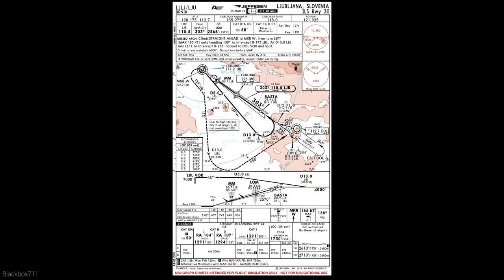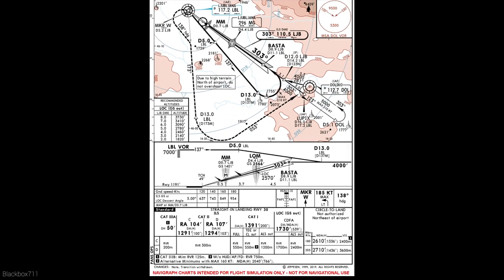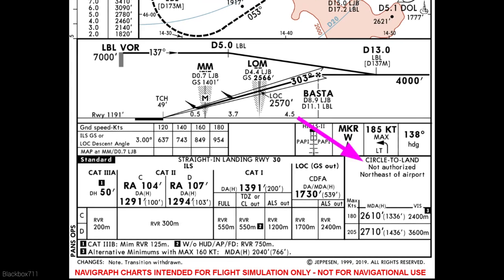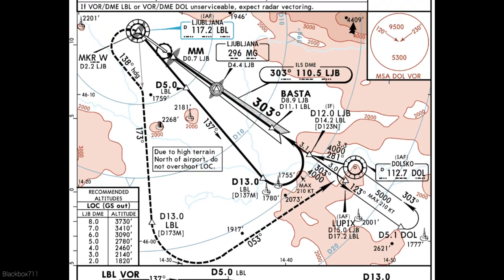Let's first have a look at an airport where there is only one instrument landing runway — that is runway 30 here in Ljubljana. If the wind conditions are such that you have to land in the opposite direction, there's only one option and that is to fly a circling approach. It says that you can fly a circling approach, however it is not authorized northeast of the airport, and that is obviously because of high terrain there.